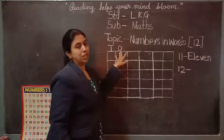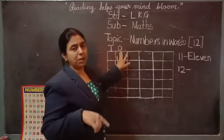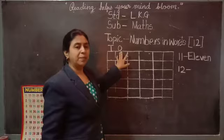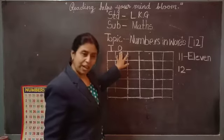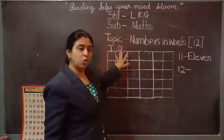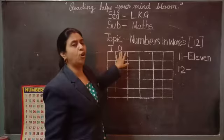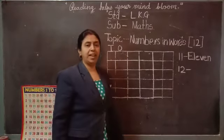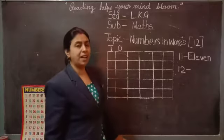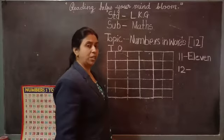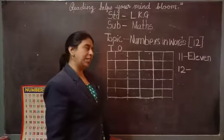Ones means one digit number. One digit number means... Who will tell me? Yes, very good. 1, 2, 3, 4, 5, 6, 7, 8, 9 - these are one digit numbers. And 1, 0, 10 is a two digit number.